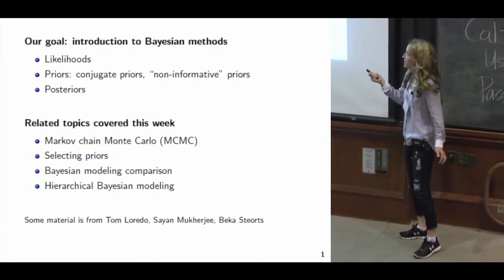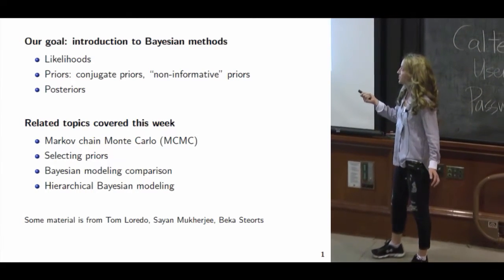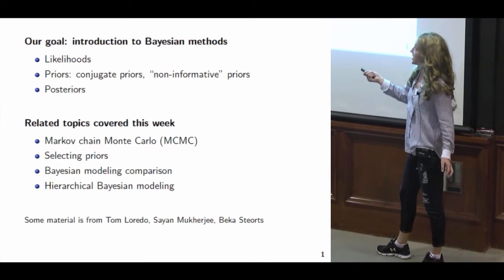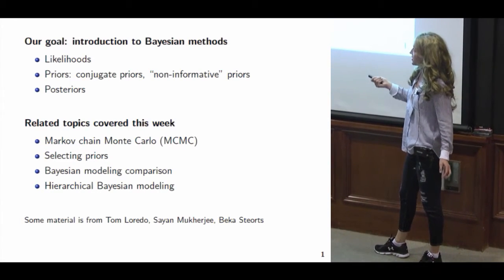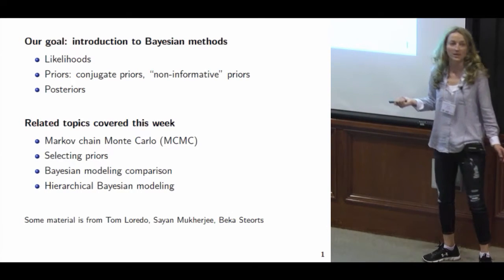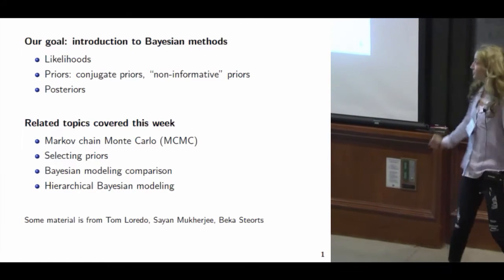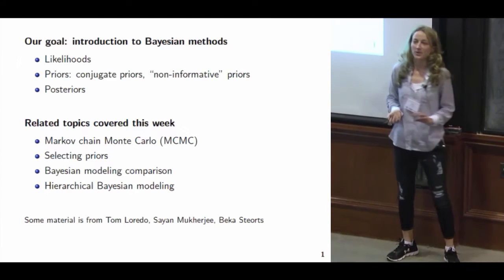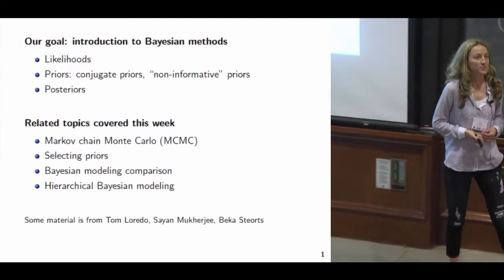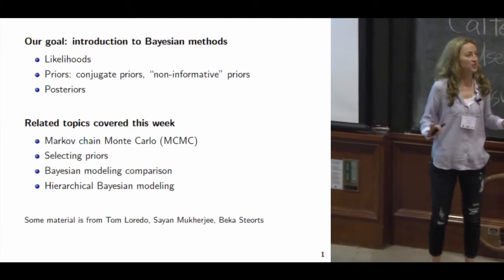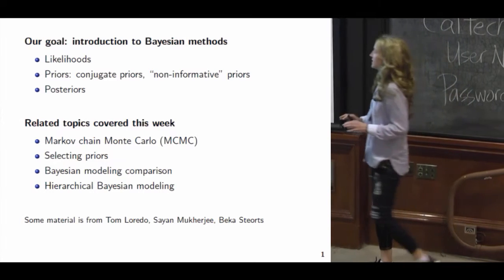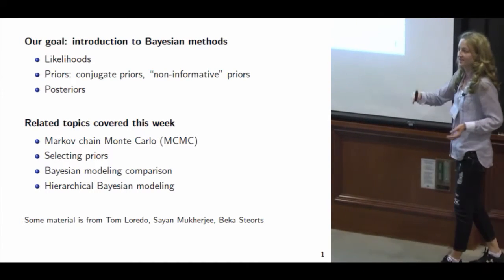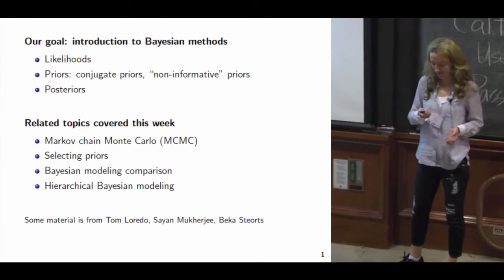Later today you'll hear about Markov chain Monte Carlo, and later in the week there will be discussions on selecting priors, Bayesian model comparison, and hierarchical Bayesian modeling. As we proceed please feel free to ask questions — it's best to get any issues with clarity addressed right away because the slides will build on each other.